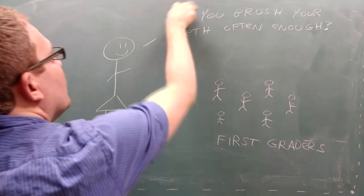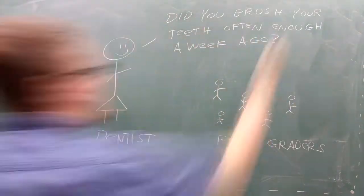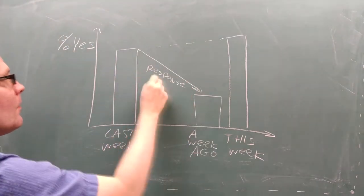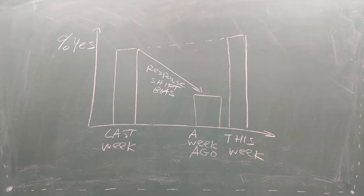The key to seeing growth is to ask, did you brush your teeth often enough a week ago, which will reveal positive gains. This discrepancy is called response shift bias and it's happening in our physics assessments as well.